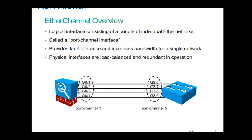For example, if we have gigabit interfaces — one gig each — and I want more throughput between two switches, I need to bundle them logically so that I can get four gig. That's the basic idea where EtherChannel is needed. It also provides redundancy: if one of the links goes down, there are still three other links to take care of the load. All four links are active.